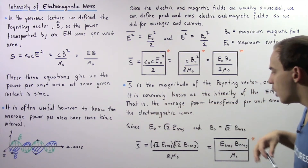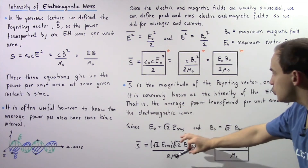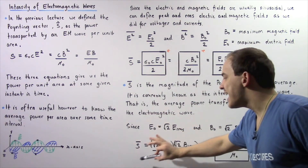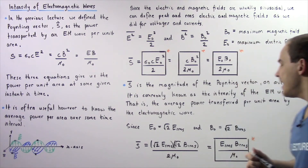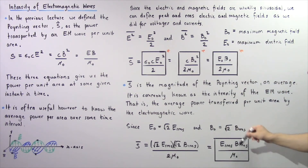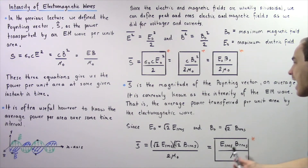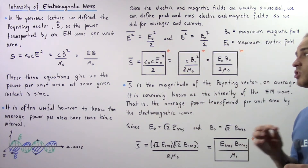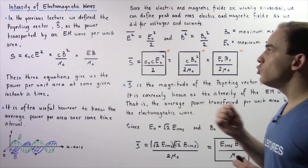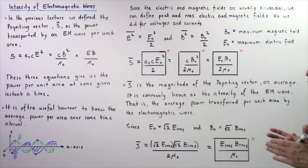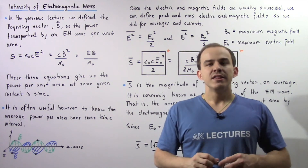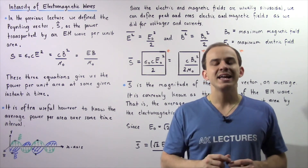The square root of 2 times the square root of 2 gives us 2, and the 2's appearing on top and bottom cancel. We are left with the intensity of the electromagnetic wave equal to the product of the root mean square electric field and the root mean square magnetic field divided by mu naught. In the next lecture, we will apply this concept and solve an example using the intensity of electromagnetic waves. The intensity of an electromagnetic wave is defined as the average power transported per unit area.